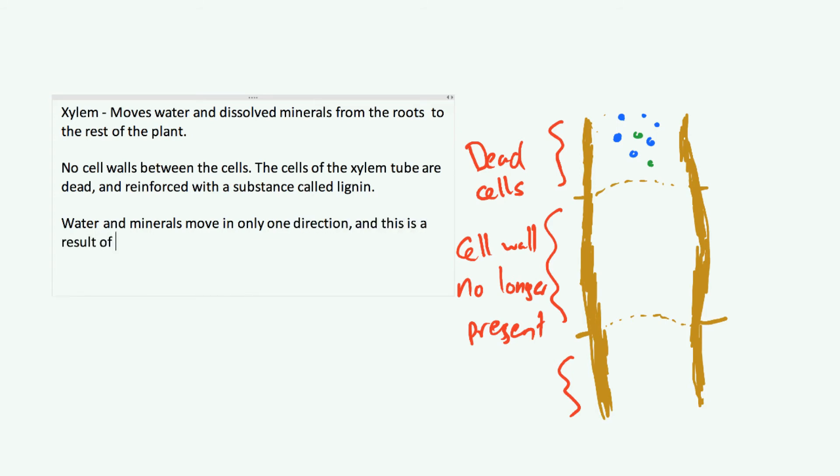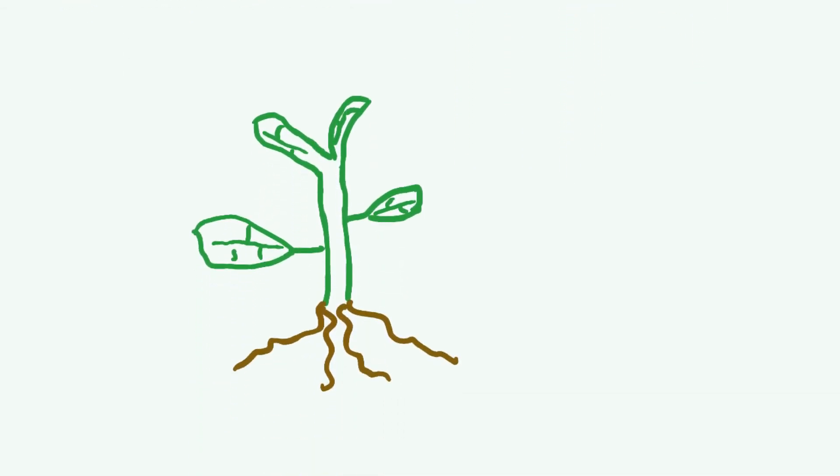This is a result of a process called the transpiration stream. Things move through the xylem vessels as a result of the transpiration stream. Here we have a diagram of a plant. The reason we call this the transpiration stream is that transpiration is basically the evaporation of water from a plant. Water is evaporated and then lost from the plant.